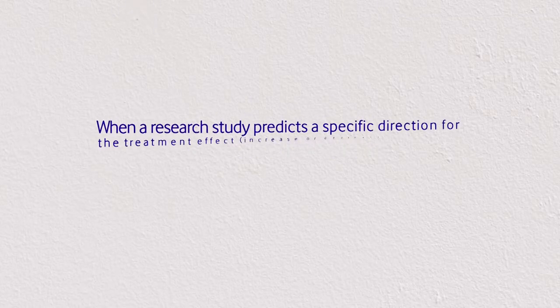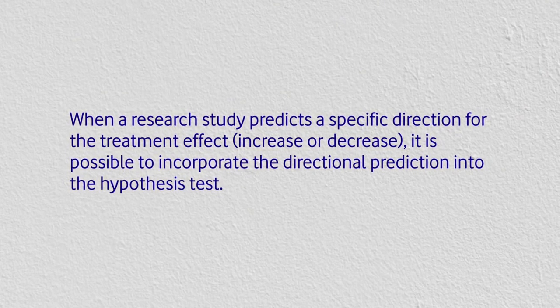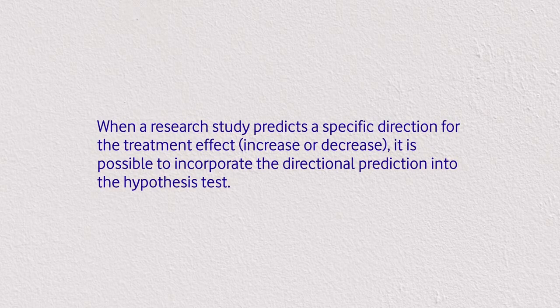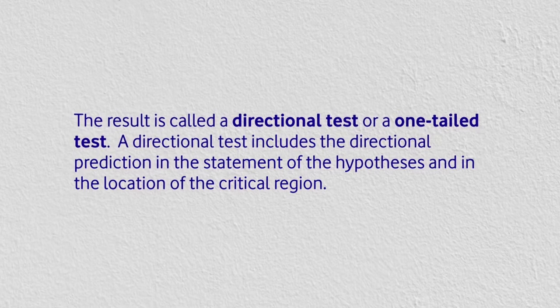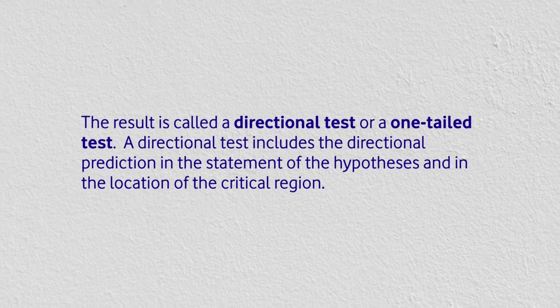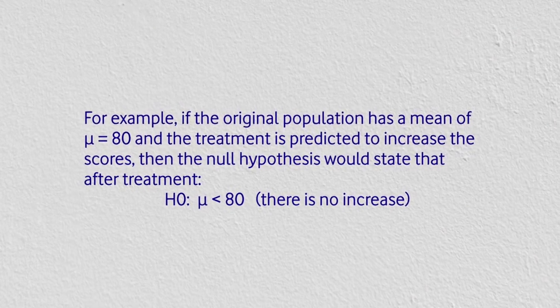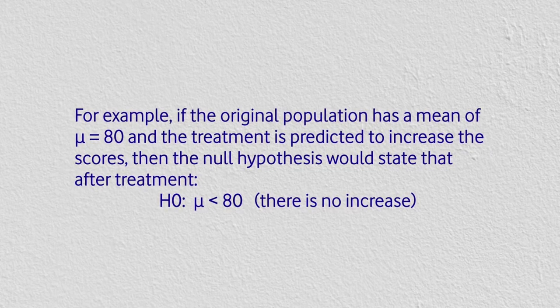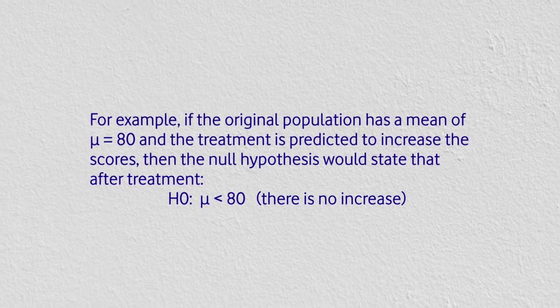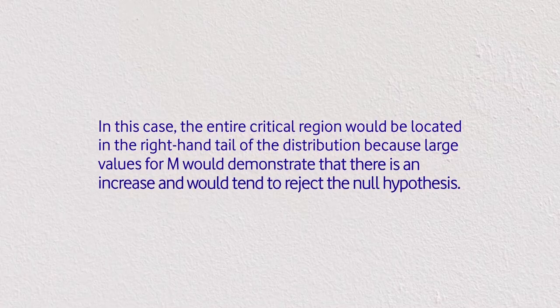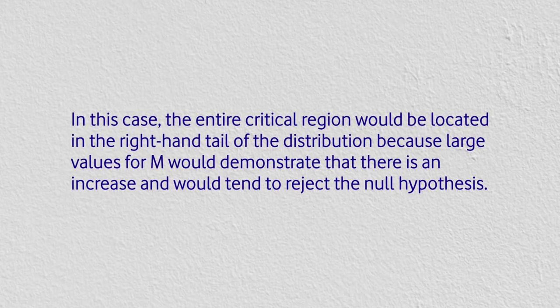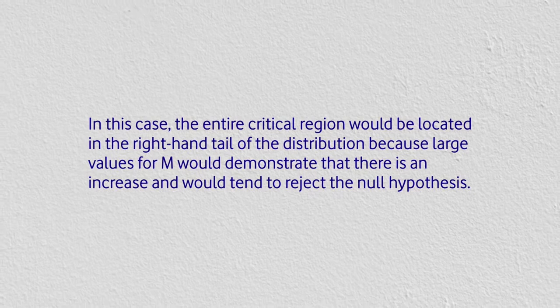When a research study predicts a specific direction for the treatment effect — increase or decrease — it is possible to incorporate that directional prediction into the hypothesis test. This is called a directional test or a one-tail test. For example, if the original population has a mean of mu = 80 and the treatment is predicted to increase scores, the null hypothesis would state after treatment mu ≤ 80 (no increase). The entire critical region would be in the right-hand tail, because large values of the mean would indicate an increase and tend to reject H₀.